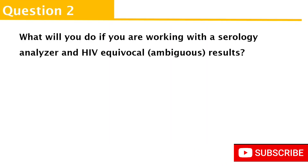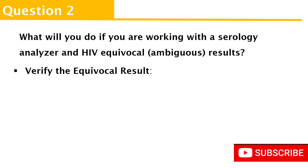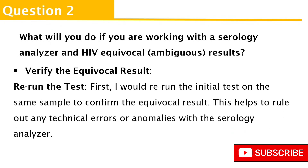Question number two: what will you do if you are working with a serological analyzer and an HIV equivocal result is obtained? An equivocal result means an ambiguous result — you are unable to confidently interpret it. Number one, what you do is verify the result by re-running the test. Re-running the test helps ensure the result you are obtaining is accurate and can help rule out any technical errors or anomalies with serological analyzers.